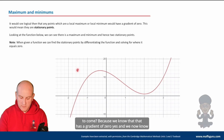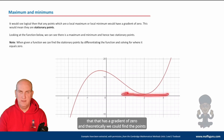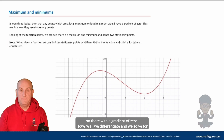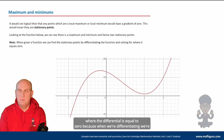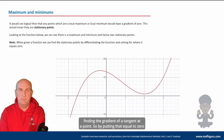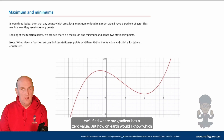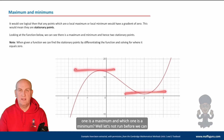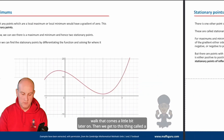We know that the top has a gradient of zero, and we now know the bottom also has a gradient of zero. Theoretically we could find the points with a gradient of zero. How? We differentiate and solve for where the differential is equal to zero, because when we differentiate we're finding the gradient of a tangent at a point. By setting that equal to zero we find where my gradient has a zero value. But how would I know which one is a maximum and which is a minimum? Let's not run before we can walk — that comes a little bit later.